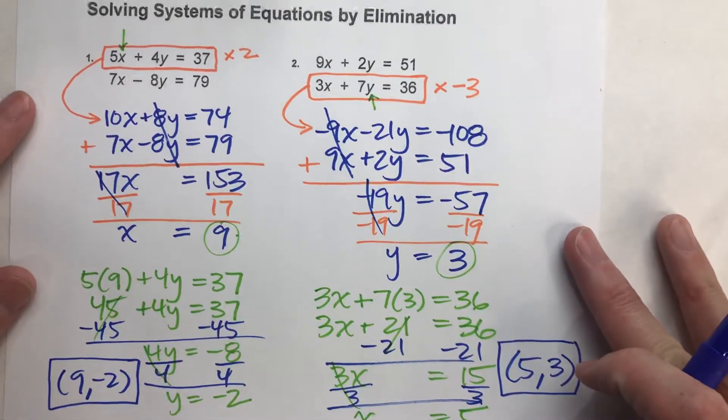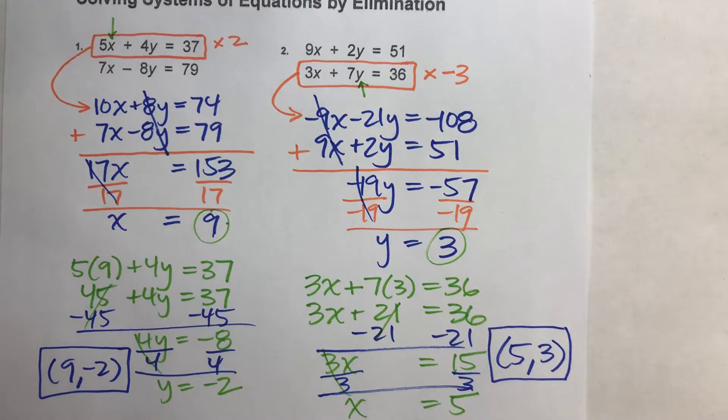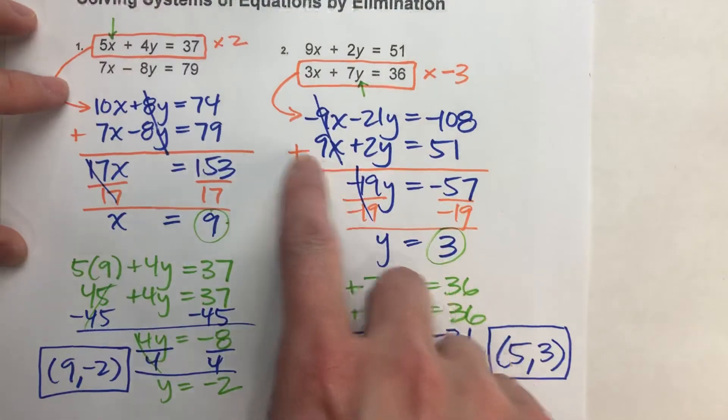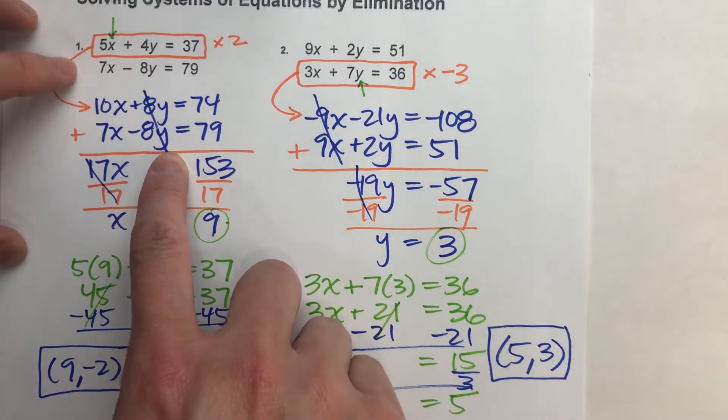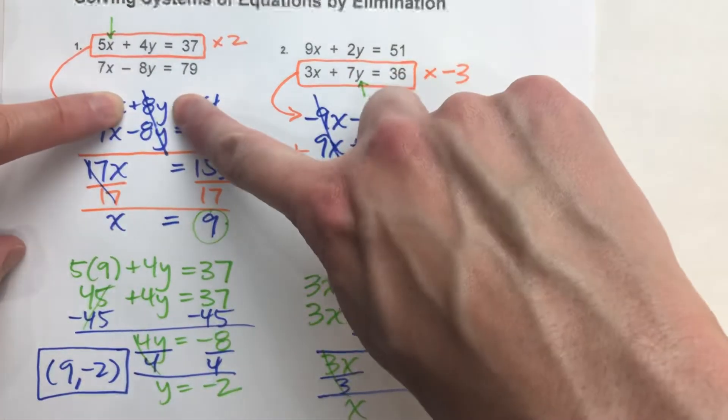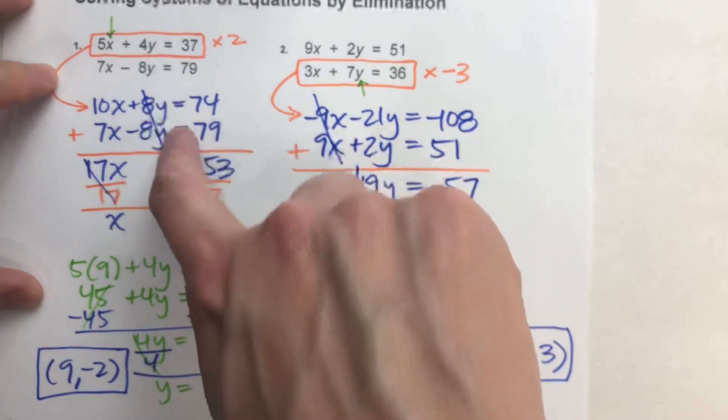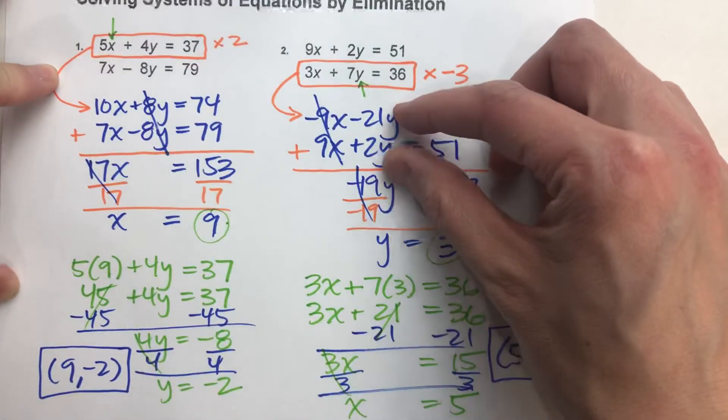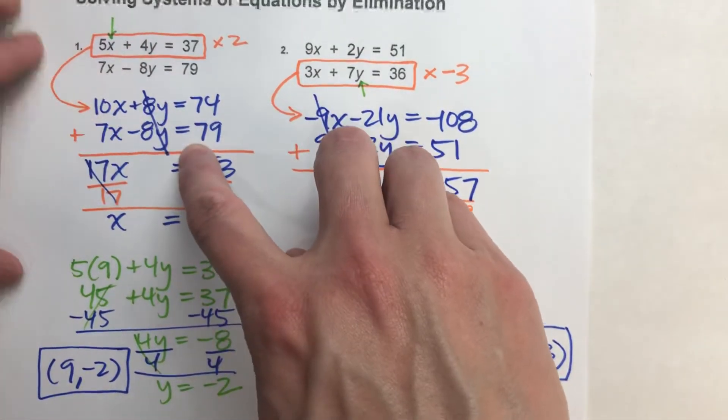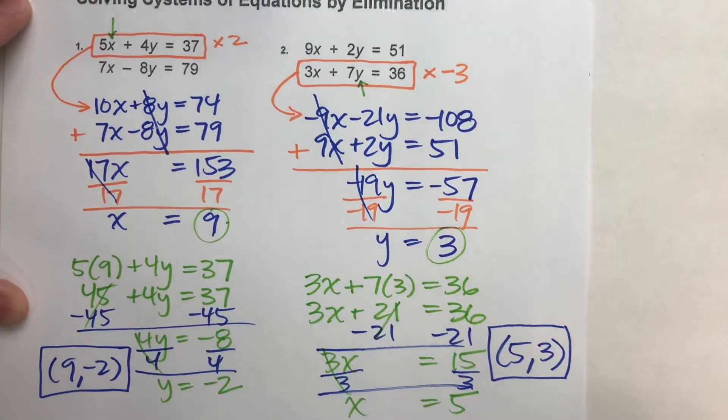So the key to this method is making sure you put yourself in a situation where you can eliminate either the x's or the y's. And the way you do that is by multiplying one of the equations by a number so you have a positive amount of x's or y's and a negative amount of x's or y's with them being the same number. So they're opposite numbers, right? 9x, negative 9x. 8y, negative 8y. And when you add them, they eliminate, and then we can solve.